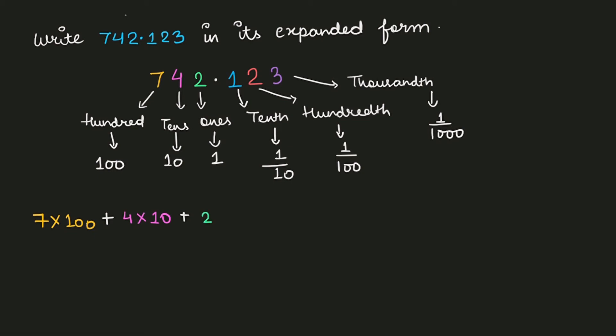2 is multiplied with 1 plus now comes the digit which comes after decimal point. So the first digit is 1 and place value of 1 here is 1 upon 10. So 1 is multiplied with 1 upon 10.